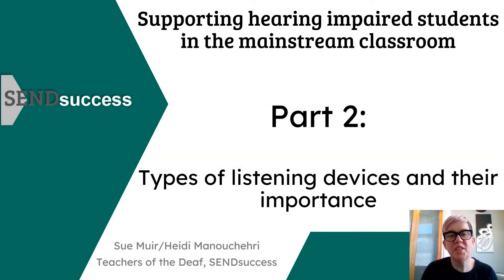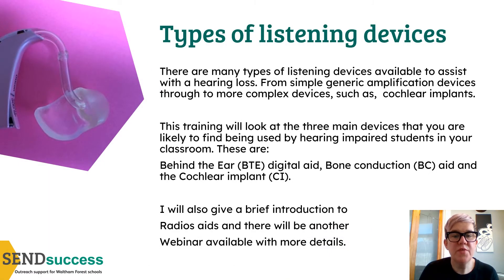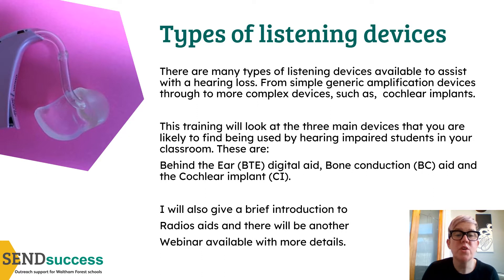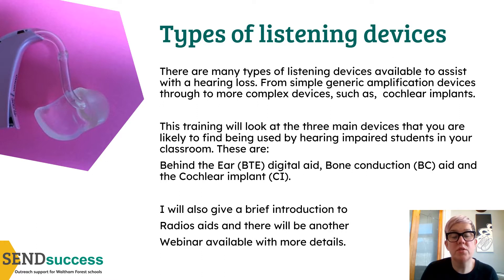Hi and welcome to part two of this Sense Access Deaf Awareness training. In this part we'll be looking at the types of listening devices and the importance of using them. There are many types available, ranging from simple generic amplification devices right through to more complex cochlear implants. This training will look at the three main devices you're likely to find in your mainstream classroom: a behind the ear digital hearing aid, a bone conduction aid, and a cochlear implant. I'll also give a brief introduction to the radio aid.